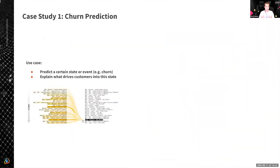In this talk, I'm going to focus on these two problems and present several techniques that we found to be efficient. Let's start with a case study around churn prediction. Essentially, the same approach is applicable not only to churn prediction, but to the majority of propensity scoring problems in general — predicting a certain customer state or event, such as churn, product return, or conversion, and also explaining what drives customers into that state.